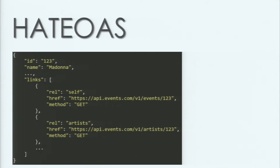Hypermedia as the engine of application state is the most omitted constraint, but you should try to use it in your API by providing links. If you don't have links, your API will still be useful, but after providing them it becomes more self-descriptive. For example, if you want to find a Madonna concert, without links you have to check the documentation to find the search endpoint and then repeat the process. With links, all you need is the root address — you can interact with the API just like you interact with a browser.